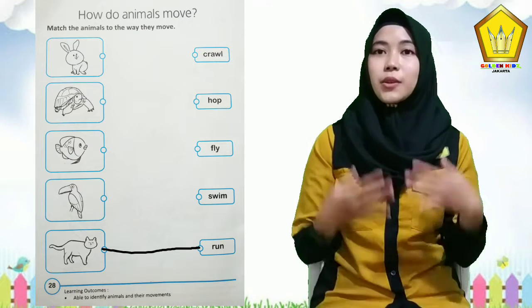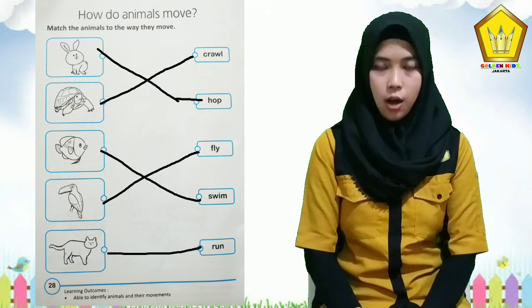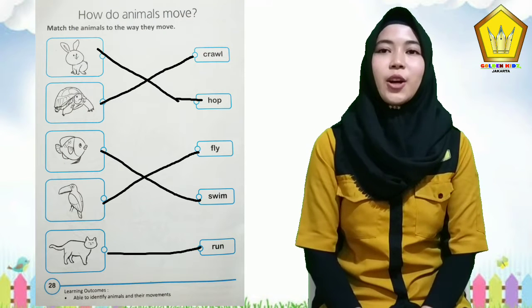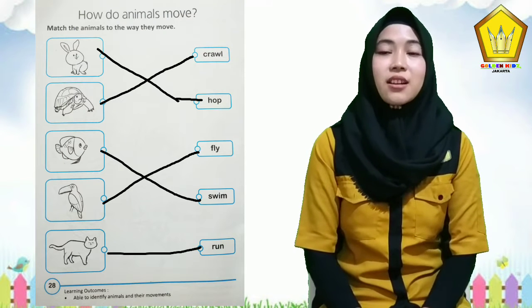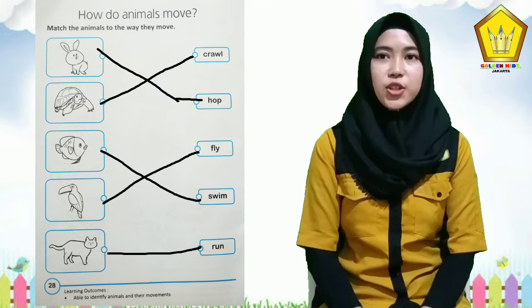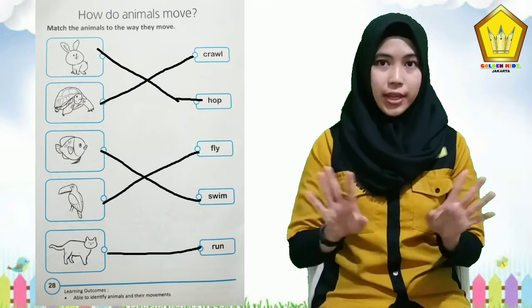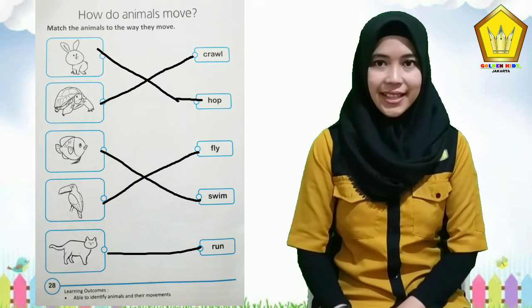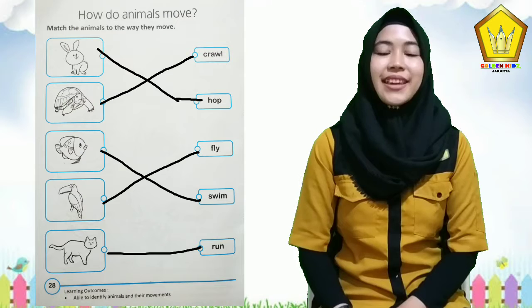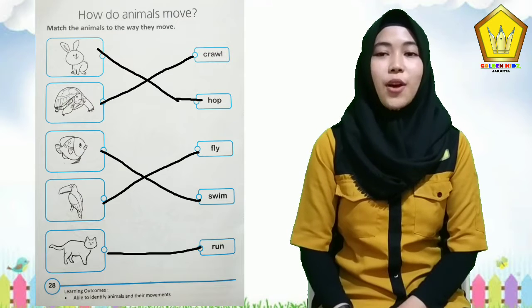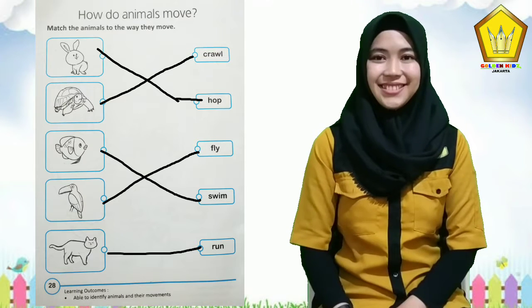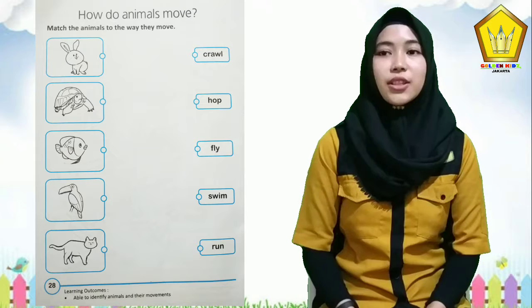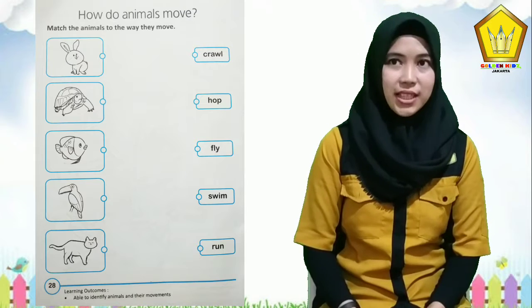Okay, now follow me: rabbit — hop, tortoise — crawl, fish — swim, bird — fly, cat — run. That is page 28. Okay, now we continue to page 29.